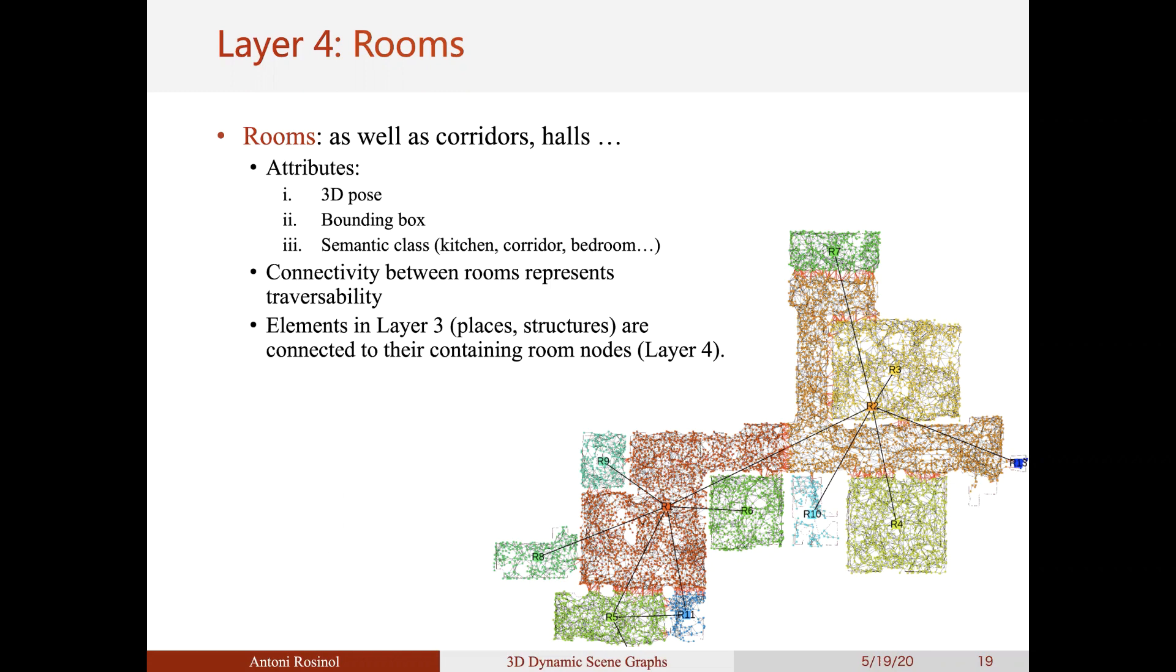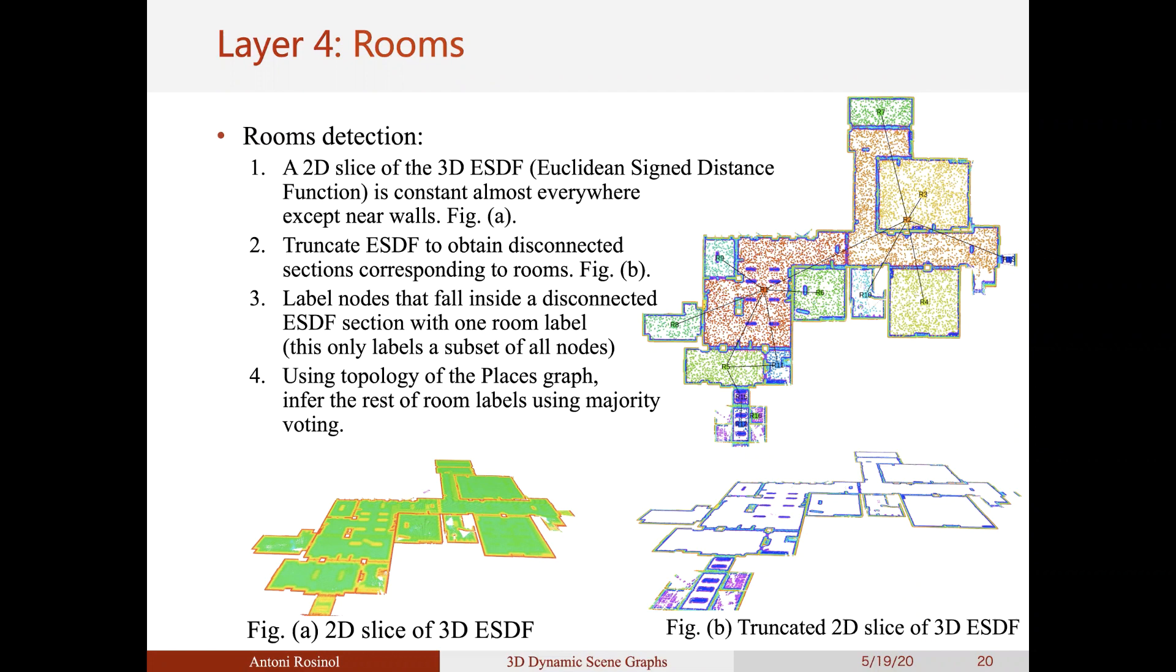Detecting rooms remains a challenging problem in a general setting. Nevertheless, in our context, we found that a simple technique achieves near-perfect results. Our insight is that the Euclidean signed distance function, which represents for each 3D point in space its Euclidean distance to the nearest obstacle in the scene, is constant almost everywhere in a 2D slice near the ceiling, where all the values are encoding the distance to the ceiling, except when we get close to a wall where the ESDF decreases to zero, meaning it intersects with the wall. Figure A shows the 2D slice ESDF, while figure B shows the truncating the ESDF gives us a good signal of the room layout.